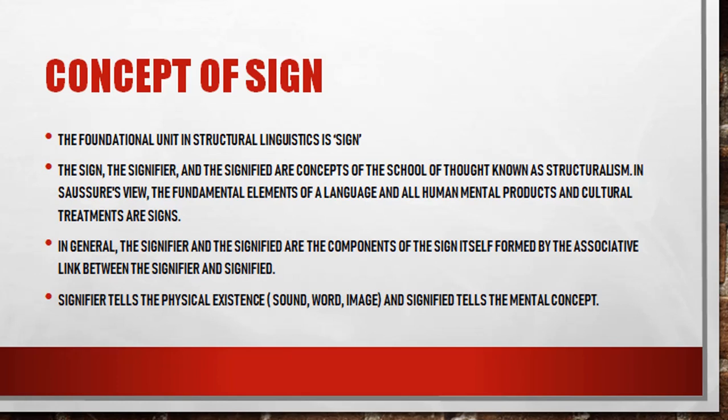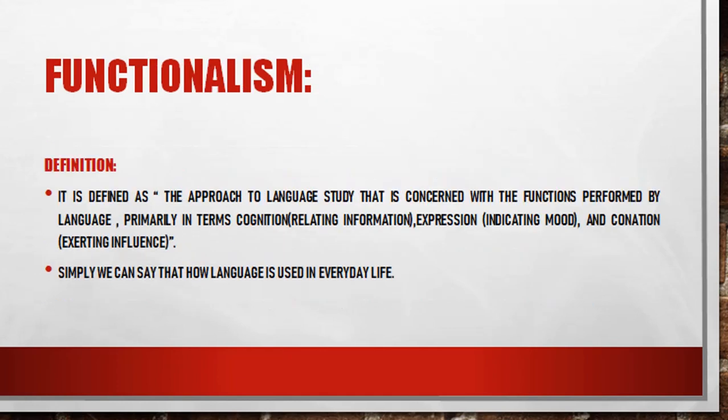The signifier and signified are the components of the sign itself, forming the link between them. The signifier tells us about physical existence — whether it is words, sound, or image. Those things that exist are signifiers, which generate our mental concept.